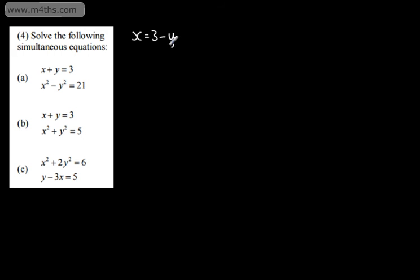So, on equation 1, I'm going to rearrange this. I can write that x is equal to 3 minus y, or y is equal to 3 minus x. It really doesn't matter — it's entirely up to you. What I'm going to do is make x the subject: x equals 3 minus y, and that is equation 1. I'm now going to make this substitution into equation 2 to eliminate x.